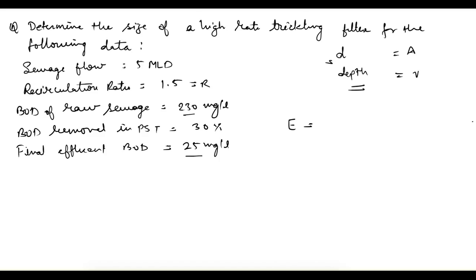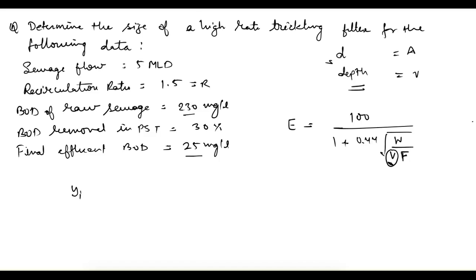For volume, recall the NRC formula for efficiency: E = 100 / [1 + 0.44 × √(W / (V × F))], where W is the BOD load in kg/day, V is volume, and F is the recirculation factor. This formula includes volume, so we can use it to obtain V. We also need efficiency, which can be found from: E = [(BOD of influent − BOD of effluent) / BOD of influent] × 100.